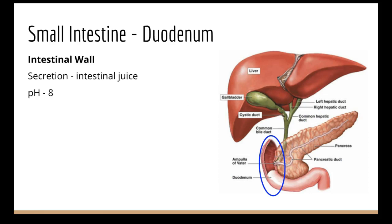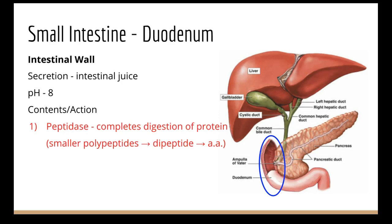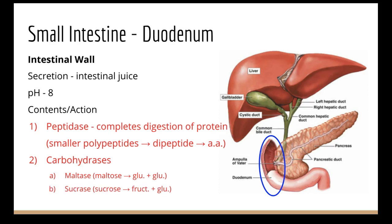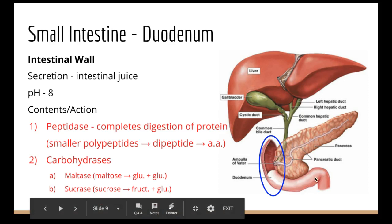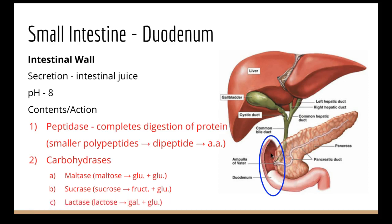The intestinal wall also releases intestinal juice at a similar pH. It contains more peptidase — a second round to break remaining polypeptides into amino acids — and a category of carbohydrate-digesting enzymes. These break disaccharides into monosaccharides: maltase breaks maltose, sucrase breaks sucrose, and lactase breaks lactose. All of these are released into the duodenum so that all the chyme entering is broken down into its monomers.